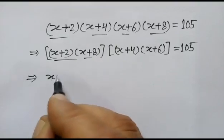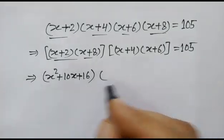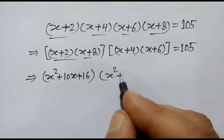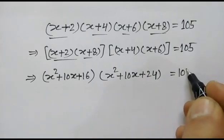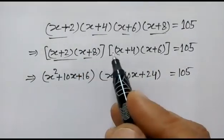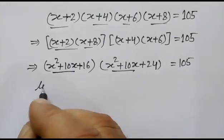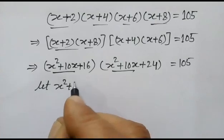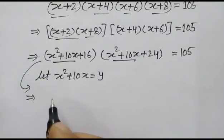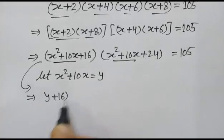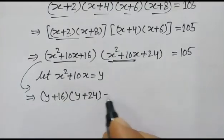If we multiply these pairs, we get x²+10x+16 and x²+10x+24 equal to 105. We rearrange this equation to get two same terms. Let y = x²+10x, so this equation will change as (y+16)(y+24) = 105.